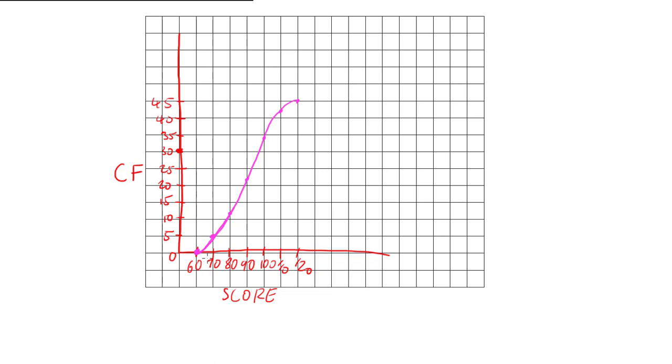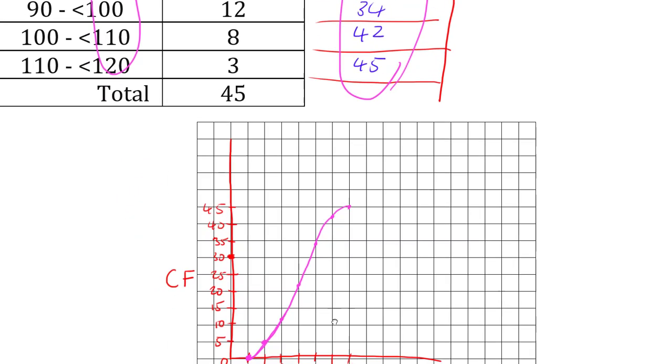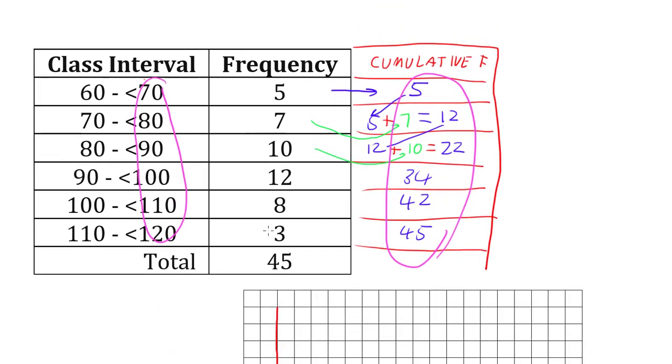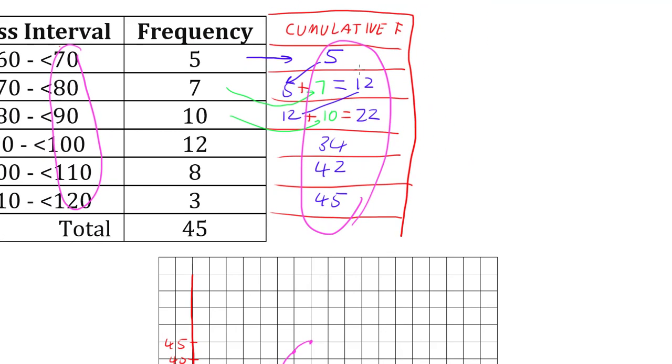And an ogive should always go like this, from low, curving its way up, to curving its way to the top. It should never start coming back down again. If you start coming back down again, it's likely you've been plotting the frequency, because notice they go up and then back down. So we do cumulative frequency which just keeps going up.